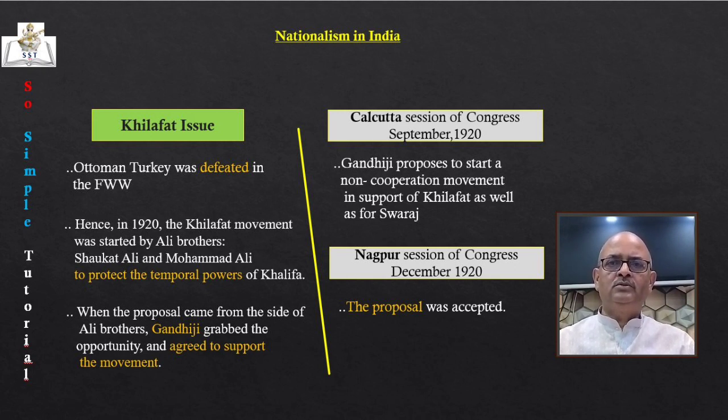On 31st January 1930, Mahatma Gandhi wrote a letter to Irwin stating 11 demands, warning that if they were not met by 11th March, Congress would launch a Civil Disobedience Movement. The most important demand was the abolition of the salt tax. Gandhiji identified the tax on salt as a symbol of sufferings of all sections of society — salt was consumed by both poor and rich alike and had no divisive elements in terms of caste, religion or class, making it a unifying symbol.